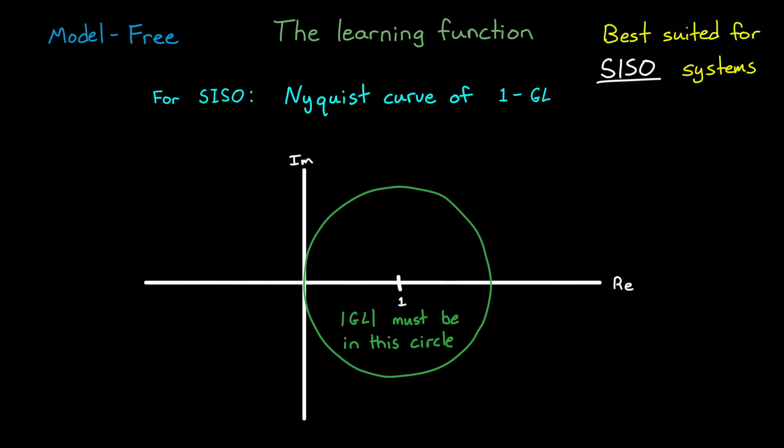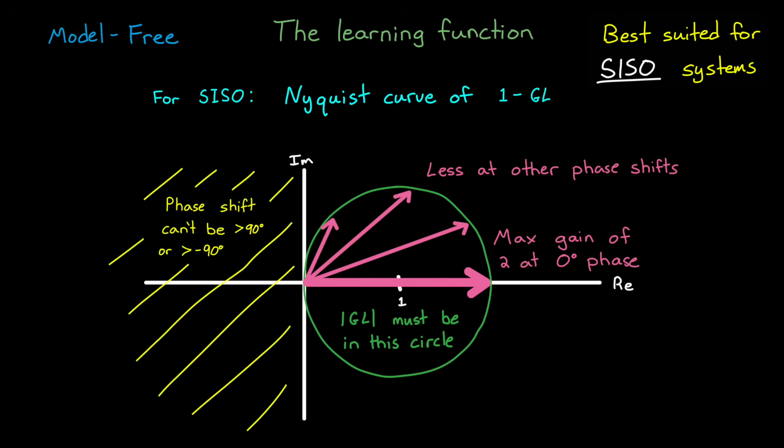And unfortunately, this is a very restrictive constraint. For one, the gain of gl can never be larger than 2, and that's just at a phase of 0 degrees. It's much less at other phase shifts. And the phase can never be shifted by more than 90 degrees.